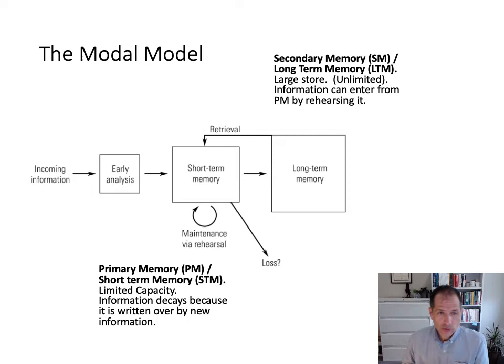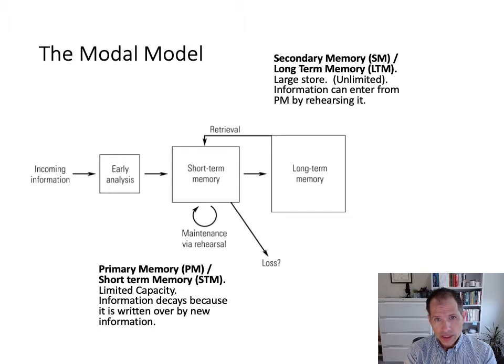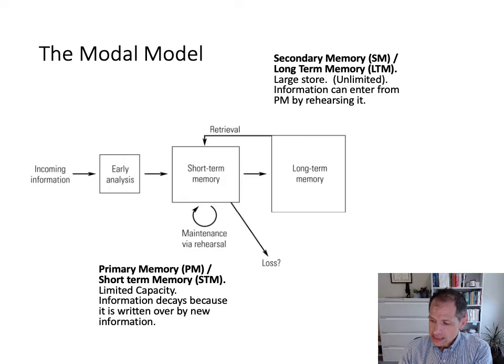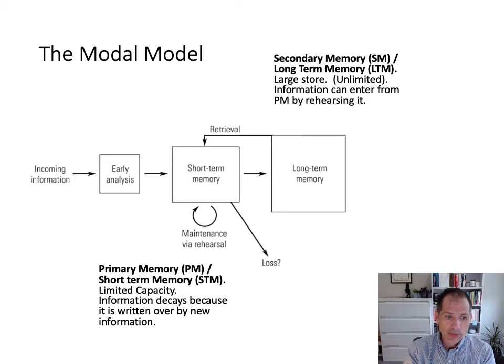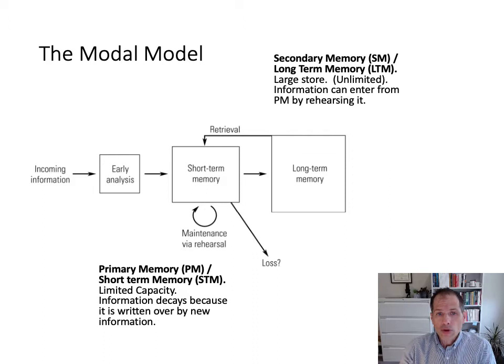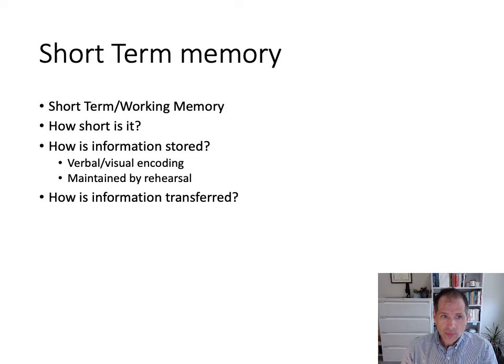At the same time, you can transfer information into long-term memory by rehearsing it enough. You can rehearse by saying it, imagining it, or thinking about what it means — that's called elaborative rehearsal. That helps you get information into long-term memory, and once it's established there, it doesn't decay right away. It can still decay and you can still forget things, but it isn't overwritten by new information the way it is in short-term memory. This secondary memory or long-term memory is a larger, seemingly unlimited store.